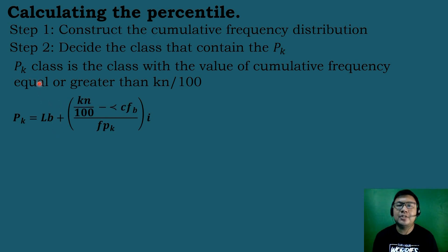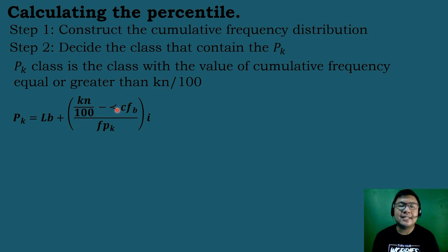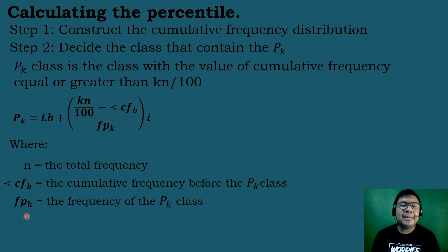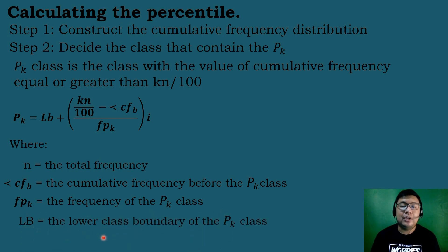After we have identified the percentile class, we will be using the formula for the percentile of the group data: Pk is equal to Lb plus the quantity k times n divided by 100 minus less than cf sub b, all over f, times the interval. Where n is the total frequency, less than cf sub b is the cumulative frequency before the percentile class, f_pk is the frequency of the percentile class, Lb is the lower class boundary of the percentile class, and i is the class width or the interval.